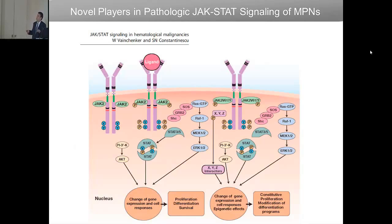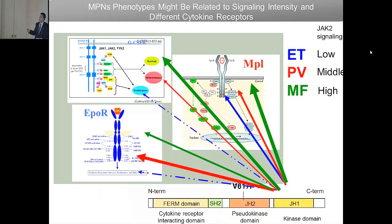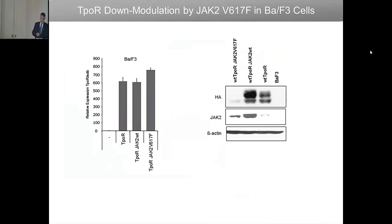We started this presentation with the downregulation of this receptor in disease patients. We could reproduce that by co-expressing JAK2 V617F with the receptor — it is a protein destruction phenomenon, not message downregulation, and it is done by ubiquitination. If we use JAK2 V617F knock-in mice and treat them with JAK2 inhibitors, we can recover expression of receptor on platelets, defining this as a biomarker of treatment. This also happens in patients treated for six months — one patient from London's St. Helier Hospital restored thrombopoietin receptor on the surface after six months of JAK2 inhibitor.